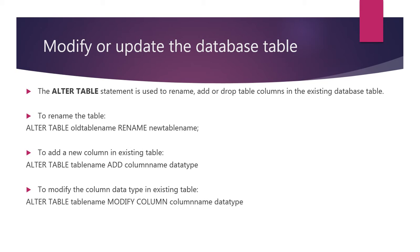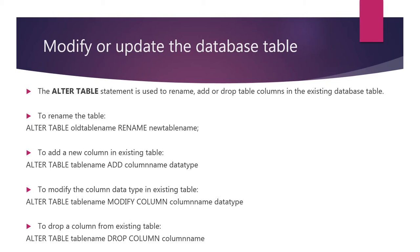To modify the column data type in an existing table, we use ALTER TABLE, the table name, the MODIFY COLUMN keyword, the column name, and the new data type. To drop a column from an existing table, we use ALTER TABLE, the table name, the DROP COLUMN keyword, and the column name to drop.